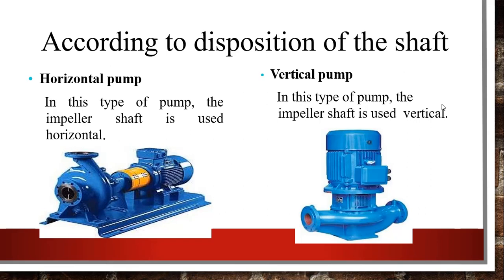According to the position of the shaft, pumps are classified as horizontal and vertical. In a horizontal pump, the impeller shaft is placed in the horizontal direction. In a vertical pump, the shaft is used in the vertical direction.